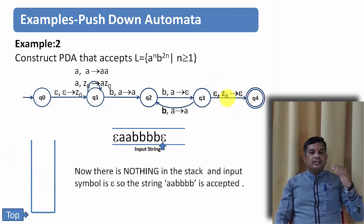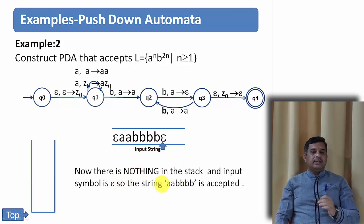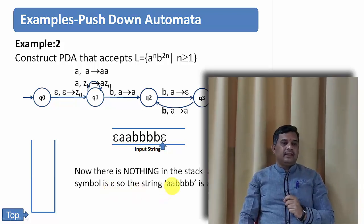Now nothing is in the stack and epsilon is the input symbol, so we can say the string a a b b b b is accepted. I hope you understood both examples — how a small change in the language changes the whole design of the PDA.